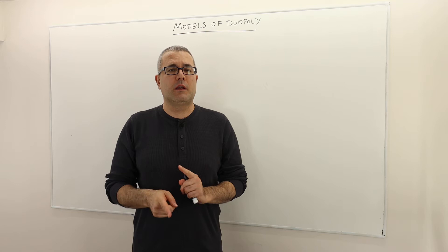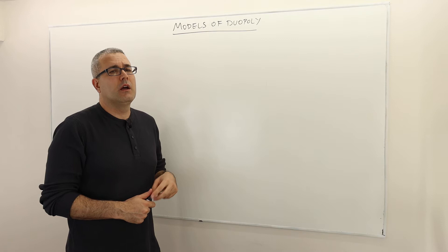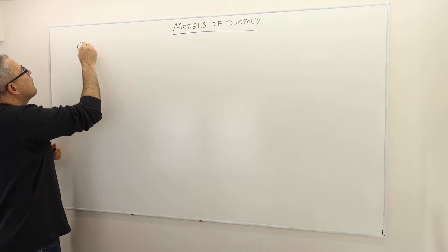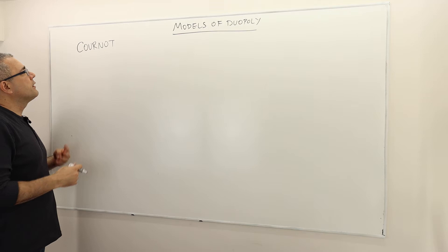Hello everyone. In this episode we're going to solve some examples for Nash equilibrium. The idea is to understand different models of duopoly — we're going to consider two models: the first one is Cournot and the second one is Bertrand. So let's talk about the Cournot duopoly.